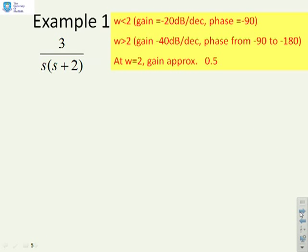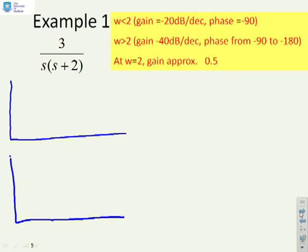Let's look at an example then. So what have we got here? We've got 3 over s(s plus 2). And I want to do the Nyquist plot. So I'm going to start, as ever, by doing a crude Bode sketch. And you'll see in the yellow box at the top, I've given some of the obvious insights. So if I mark a corner frequency at 2, then for low frequencies I have a slope of minus 20 decibels per decade.